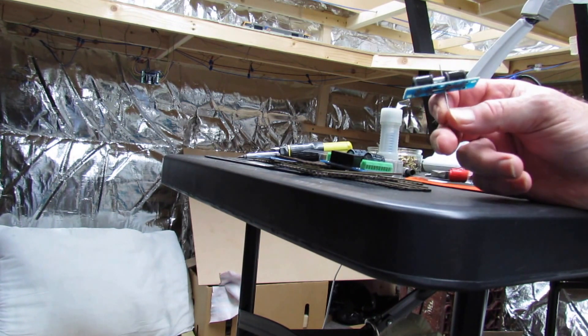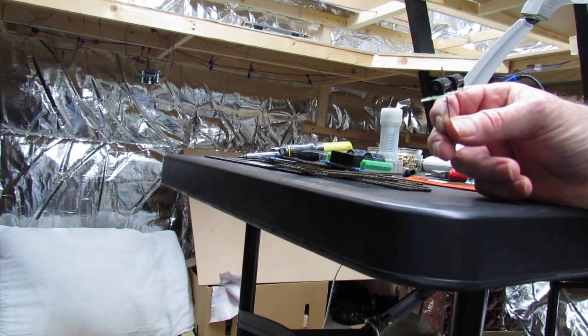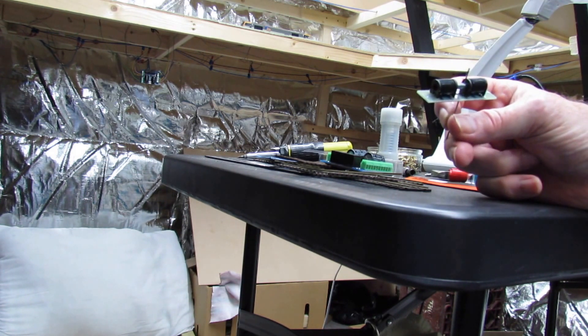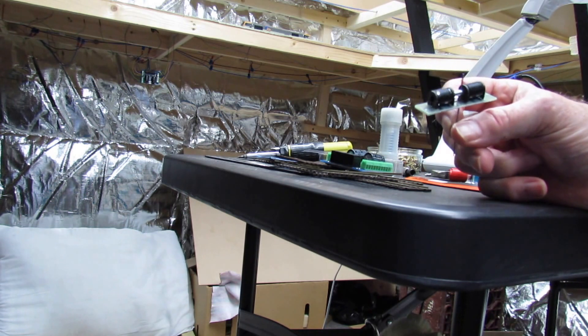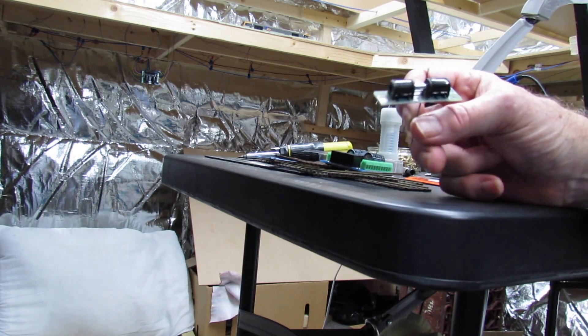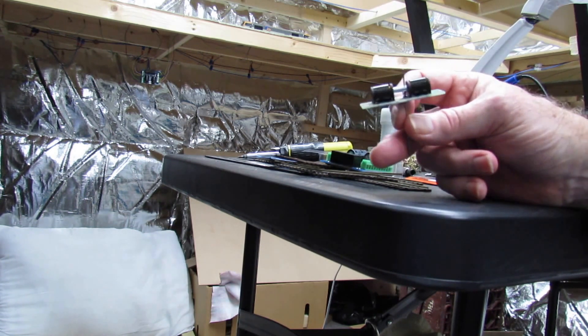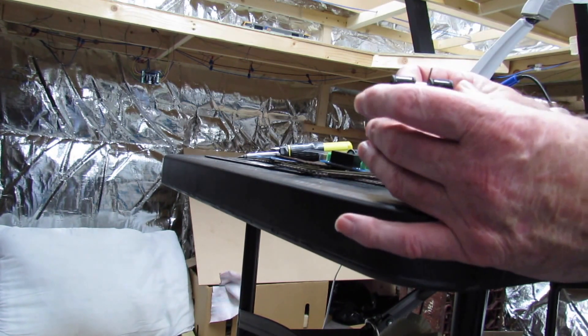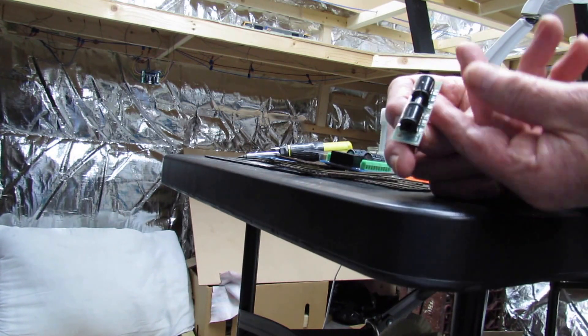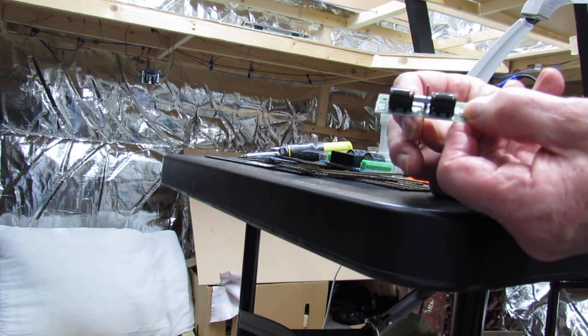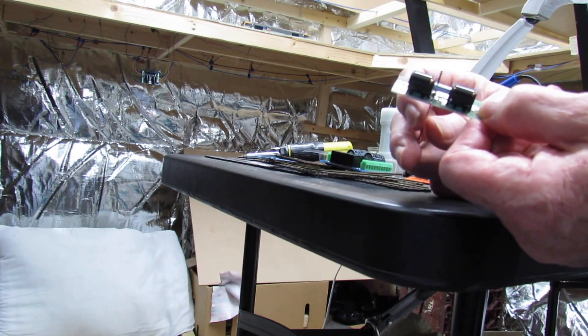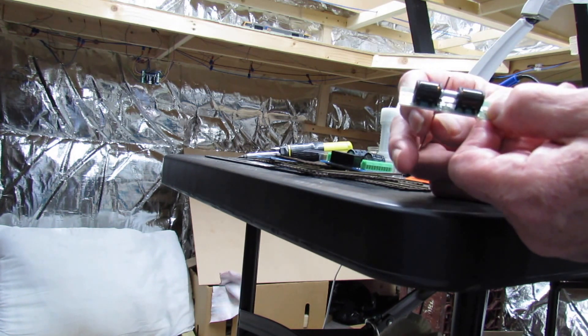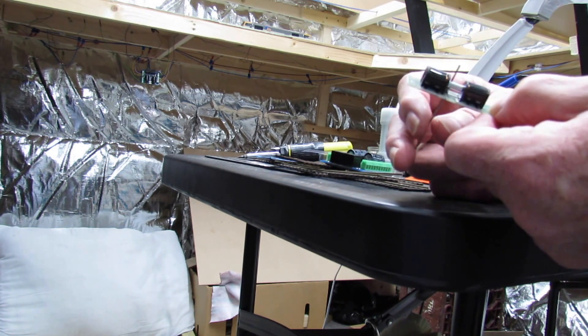The points are all changed with a point motor. I use Gauge Master SEEP point motors. There are two different types: PM1 and PM2. The PM1, of which this is one, you can change the polarity of the points at the frog on an electrofrog point. There's an inbuilt switch which changes as the point is fired or changed.